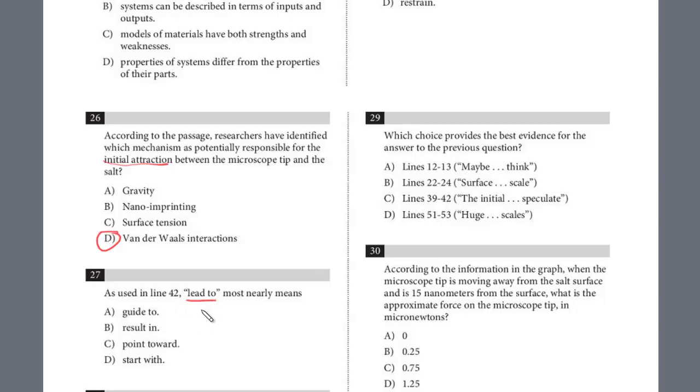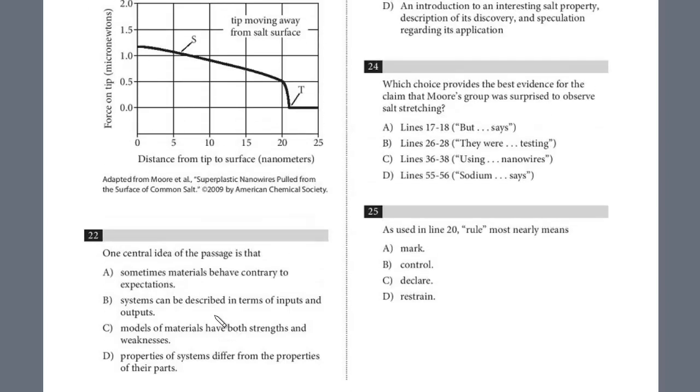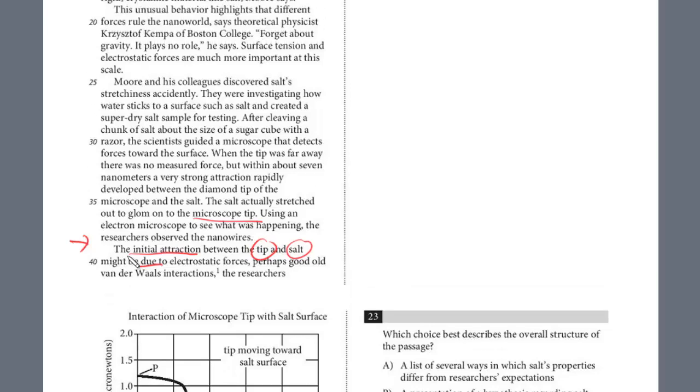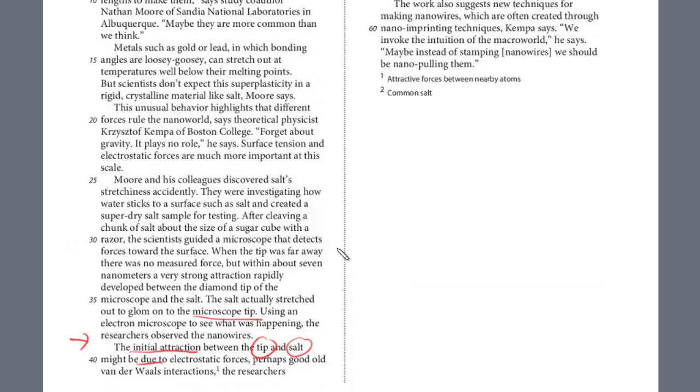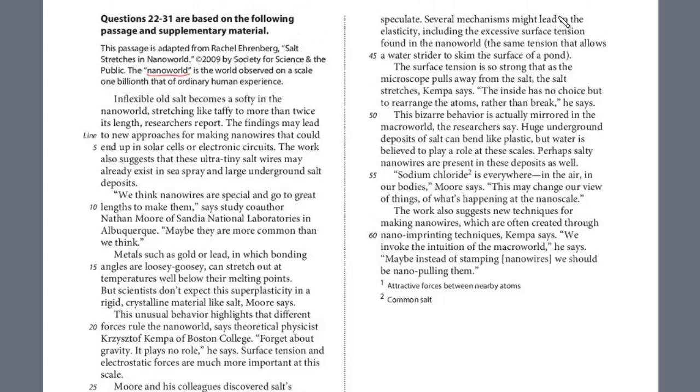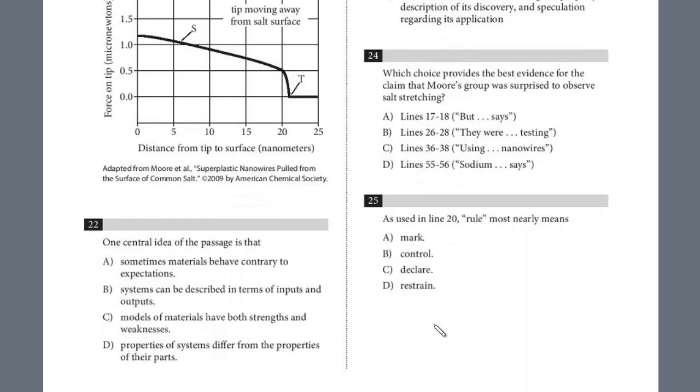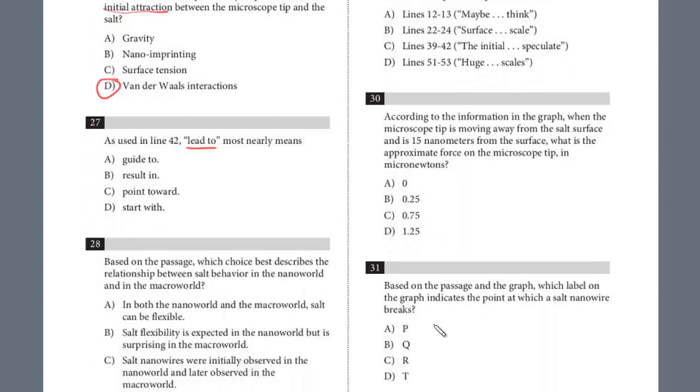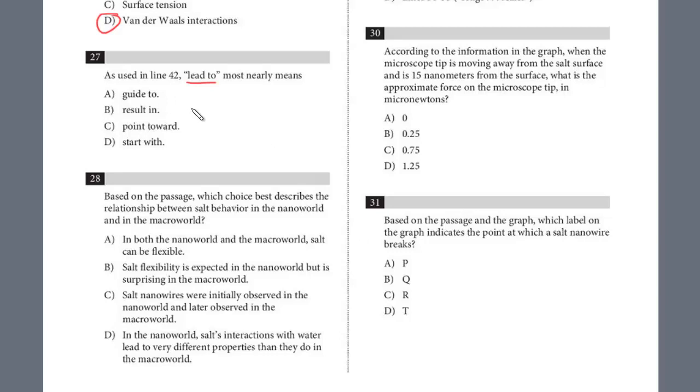Question 27 is a word in context. What does lead mean in line 42? Let's try to predict it. Line 42, lead. Here's line 40: perhaps good old van der Waals interactions. The researchers speculate several mechanisms might lead to elasticity, including the excessive surface tension found in the nanoworld. Lead to here really means—they're speculating as to what might happen after that. If we look at the choices, I think you'll be able to predict this one. The answer is result in, because they already predicted the cause and now they're saying it might lead to this effect. The answer is B for 27.